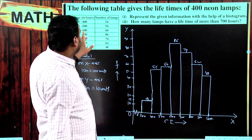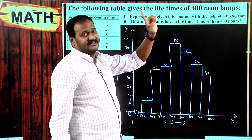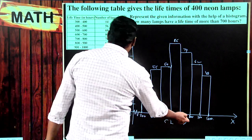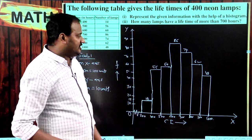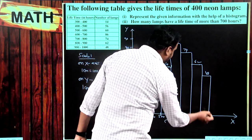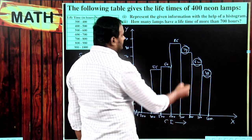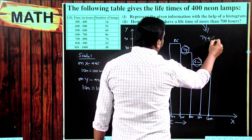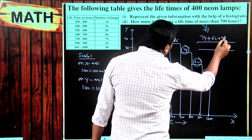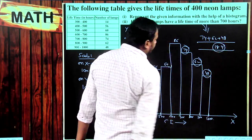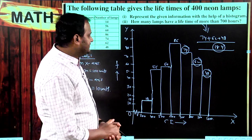To draw a histogram, consider class intervals on the x-axis and their corresponding frequency on the y-axis. For the second part: how many lamps have a lifetime of more than 700 hours? From 700 onwards: 700–800 is 74, 800–900 is 62, and 900–1000 is 48. So 74 plus 62 plus 48 equals 184. There are totally 184 lamps whose lifetime is more than 700 hours.